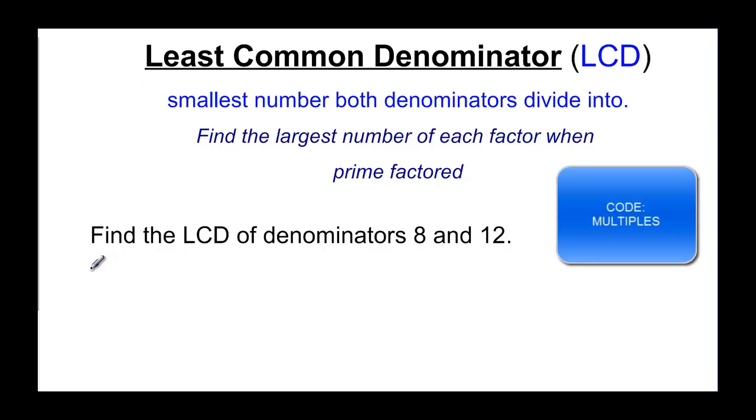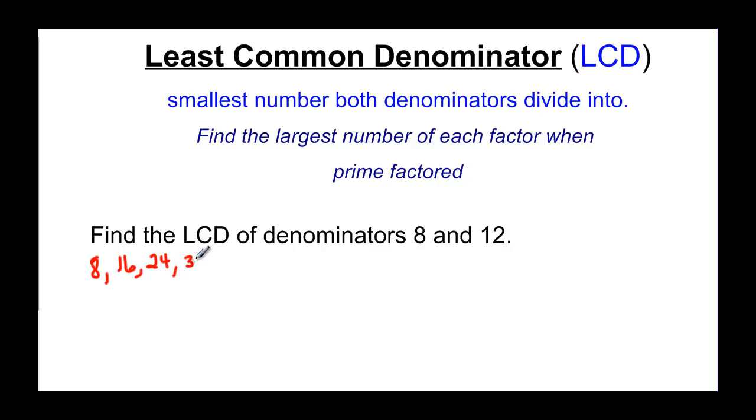The multiples of each of these numbers. So 8 would be 8, 8 times 2 would be 16, 8 times 3 would be 24, 8 times 4 would be 32, 8 times 5 would be 40. We'll see if we're far enough. Let's think about the multiples of 12. So 12, 2 times 12 is 24. Oh look, we just found something that they both have in common. So the least common denominator, the first one we came across that they had in common was 24.